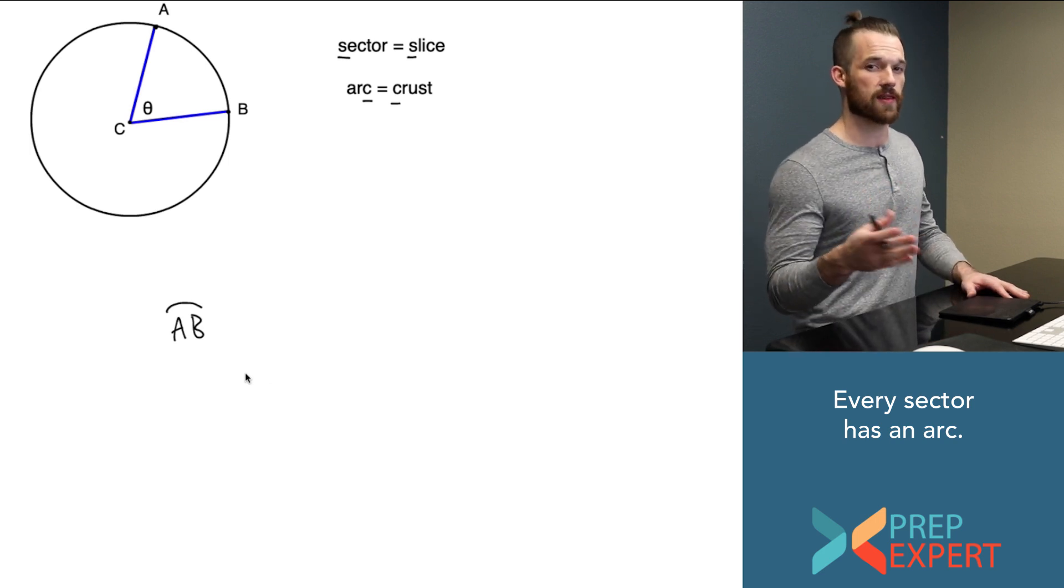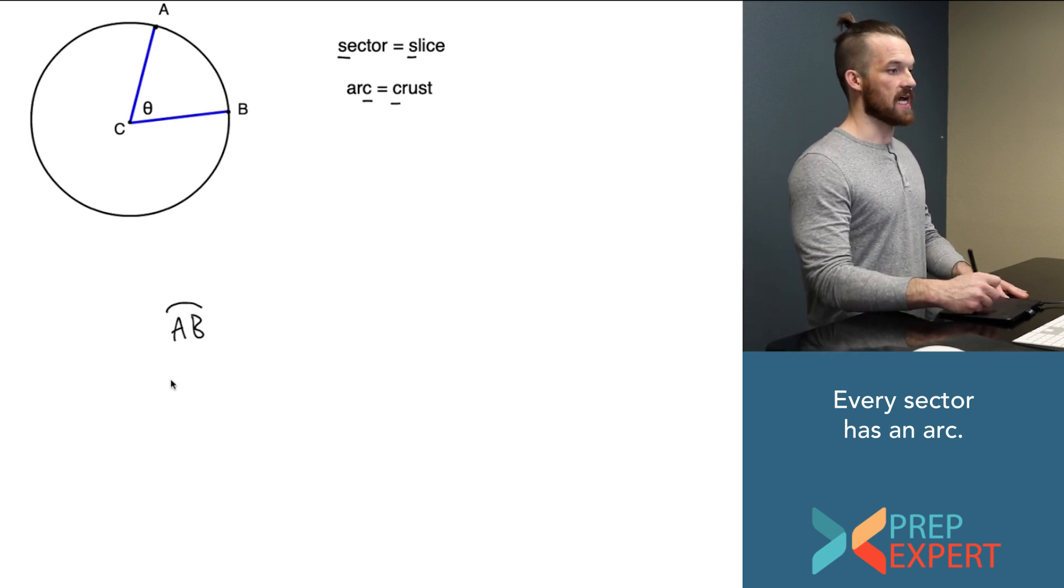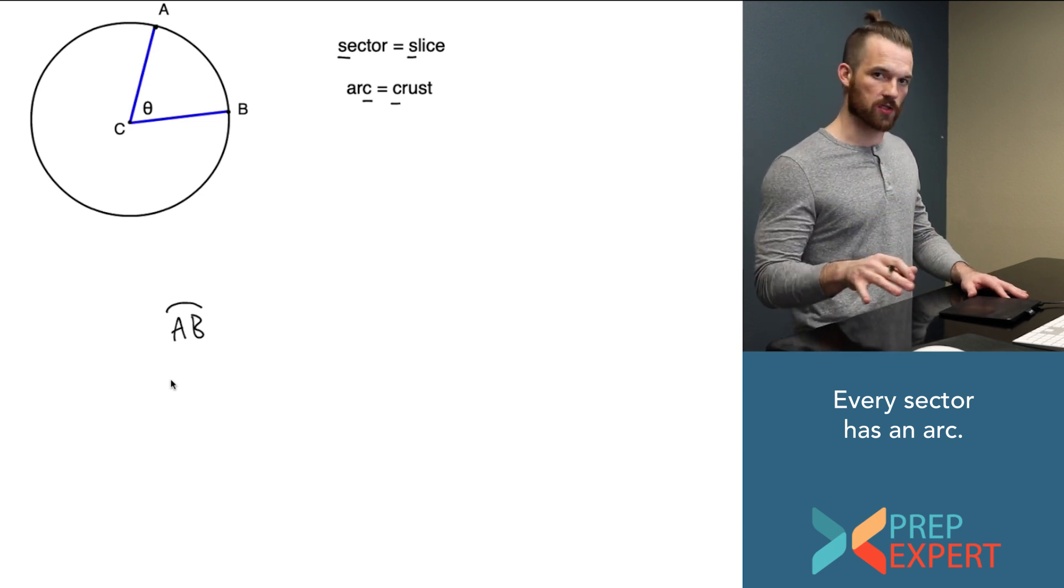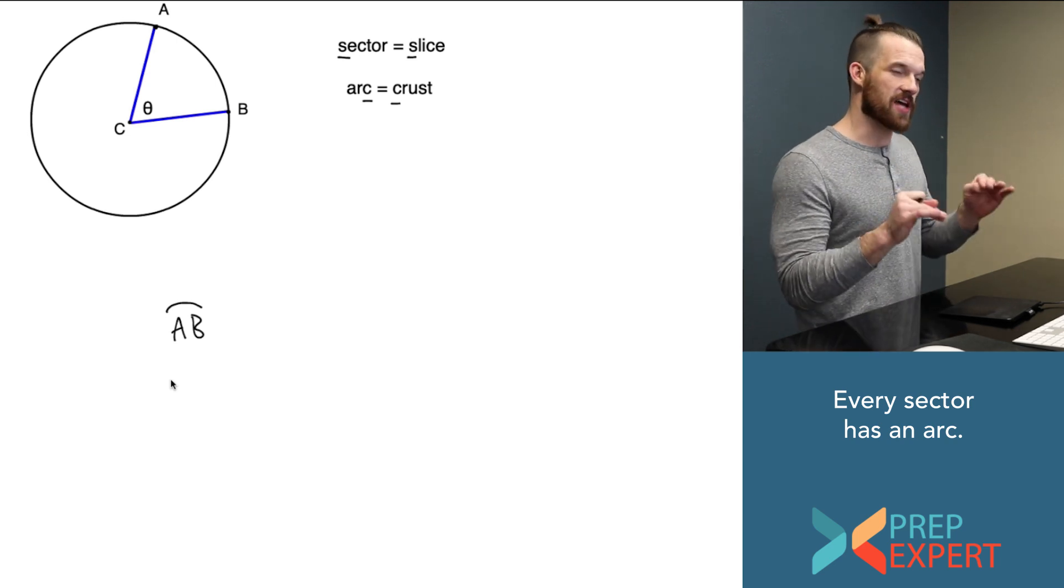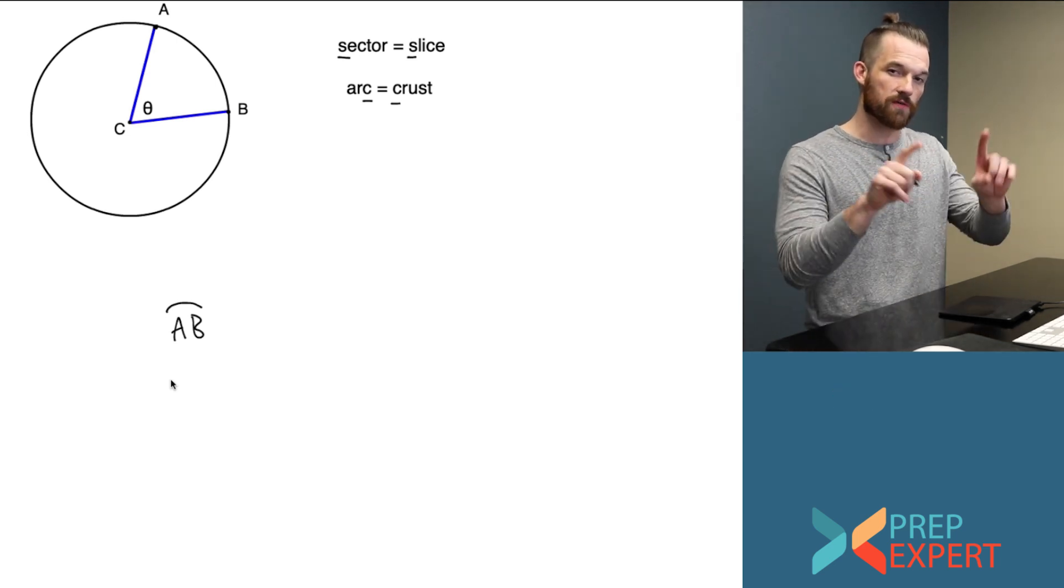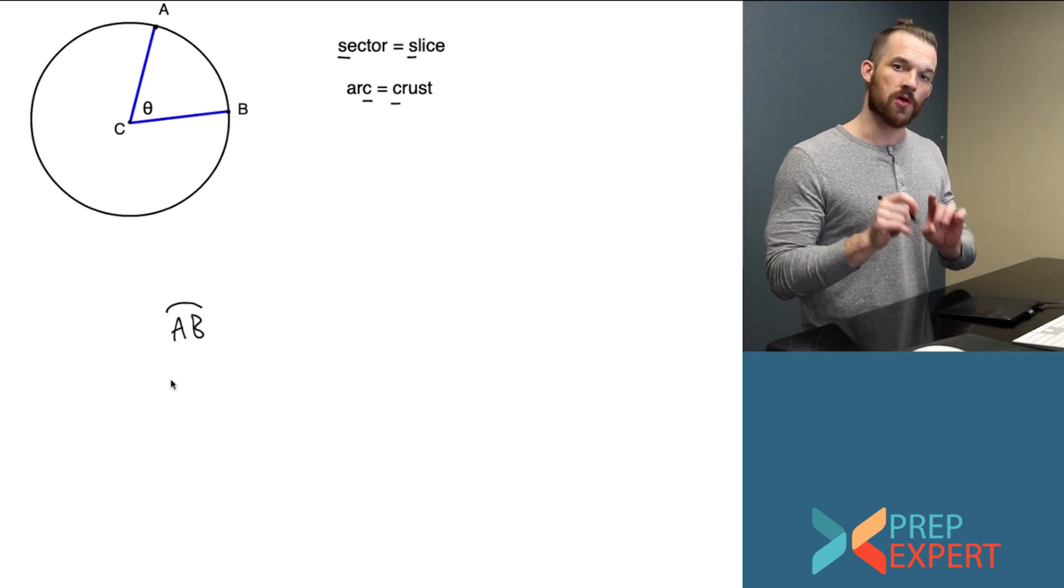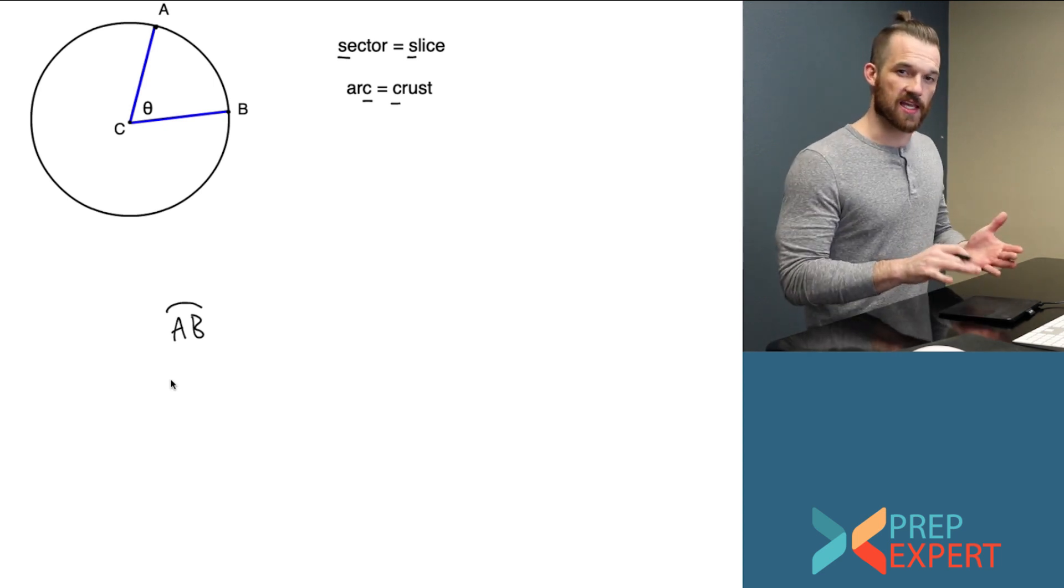That is one feature of the sector that's going to be important, the arc length. Now, the useful way to think about the attributes of a sector is to ask yourself, what attributes of the circle as a whole do they correspond to?